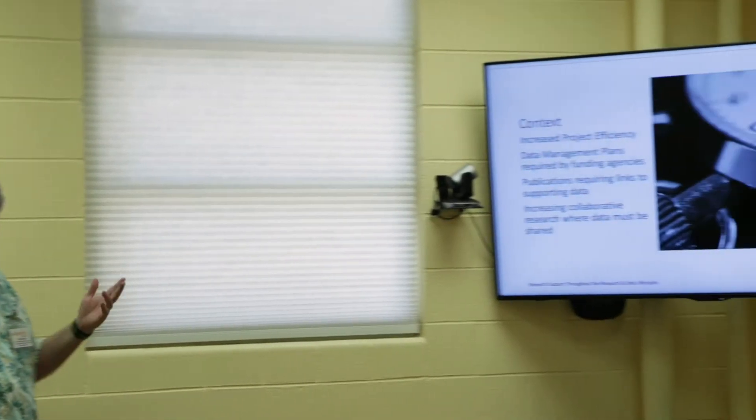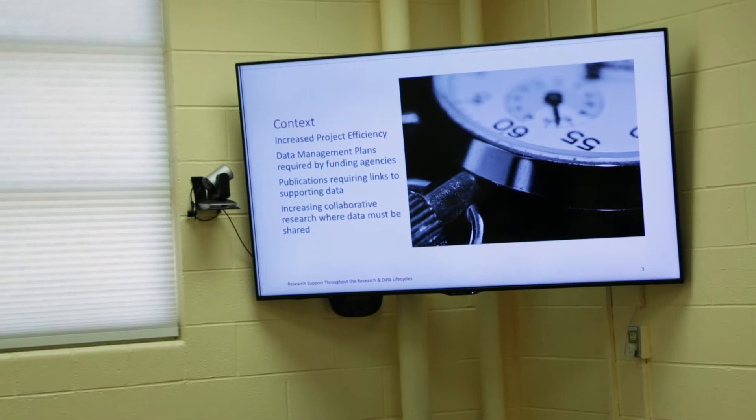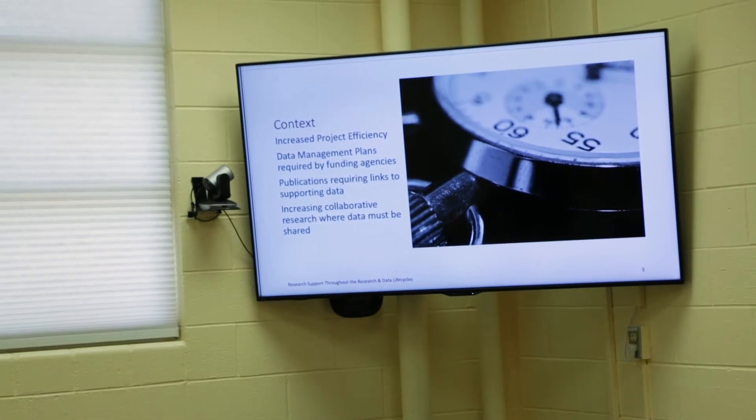We also have increasing requirements from publishers for the data associated with papers submitted for review and publication — the public accessibility of data associated with those papers. That requirement, which complements requirements for public access to research data by sponsors, brings in many additional considerations: how your data are structured, how they're documented, how you've accounted for potential restrictions on sharing, whether there are privacy, personally identifiable information, or confidentiality concerns related to patents.